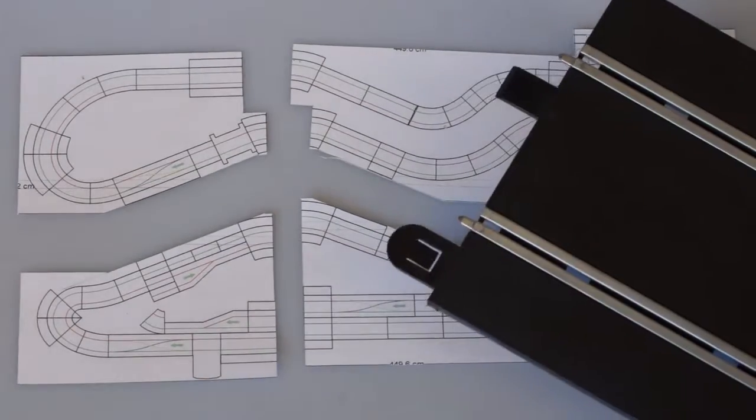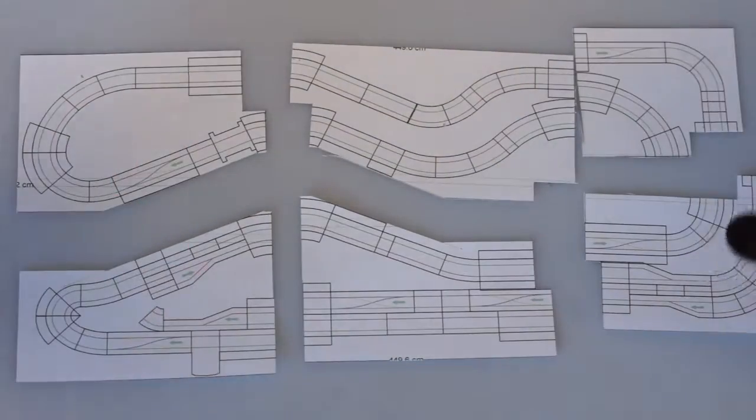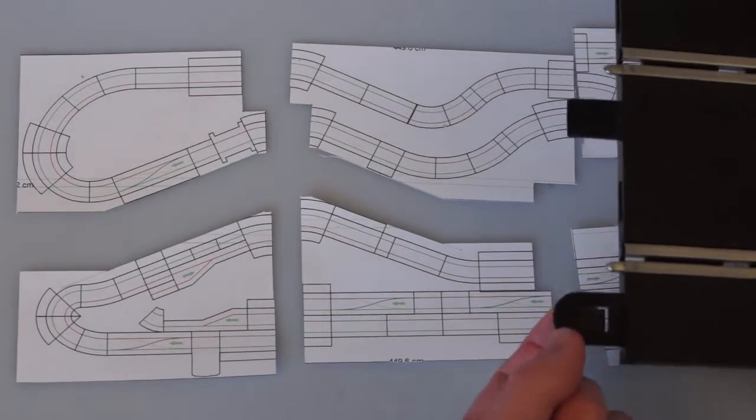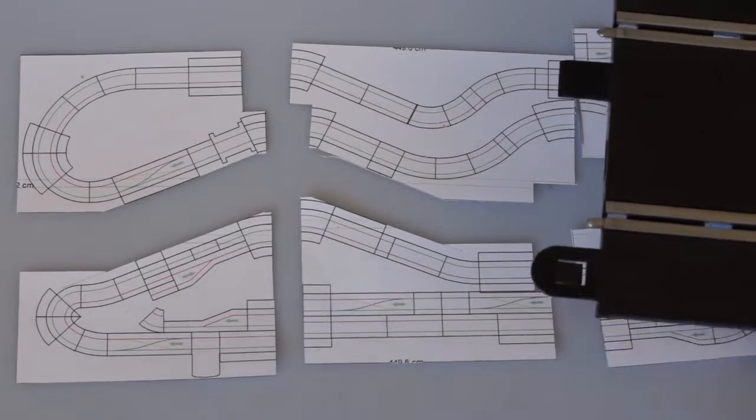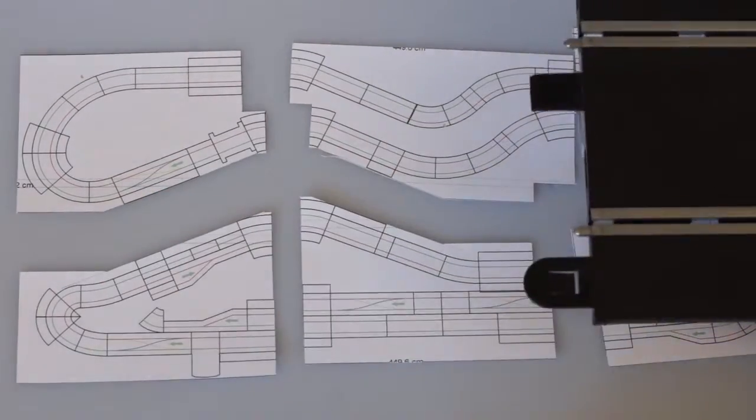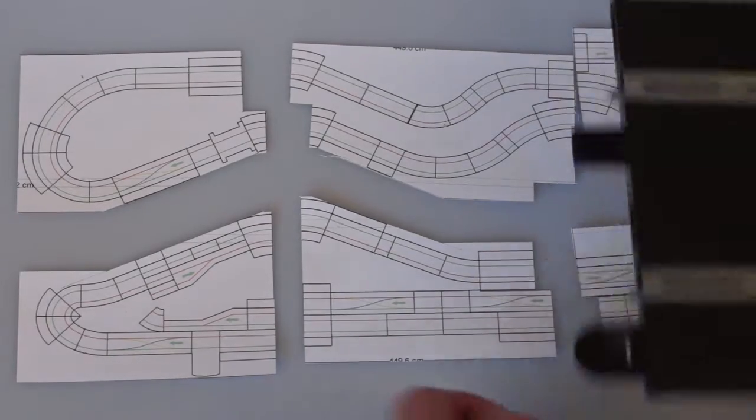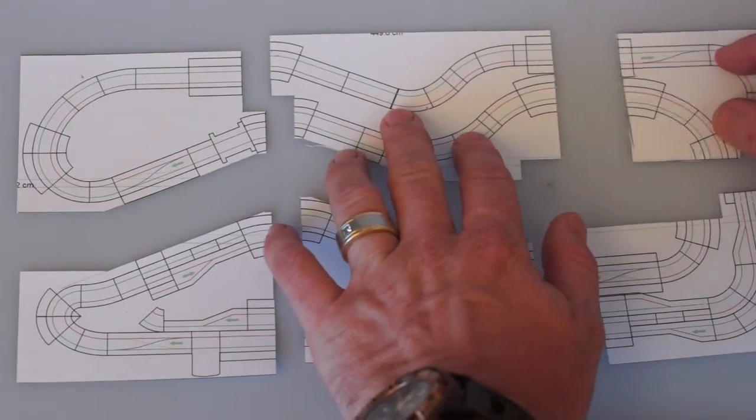The track pieces themselves they all have tabs that lock the pieces together. So the pieces on the edges we will cut the locking part just the inside of the tabs out. So the tabs will still locate the track pieces properly but they won't lock into each other so that they can come apart again.